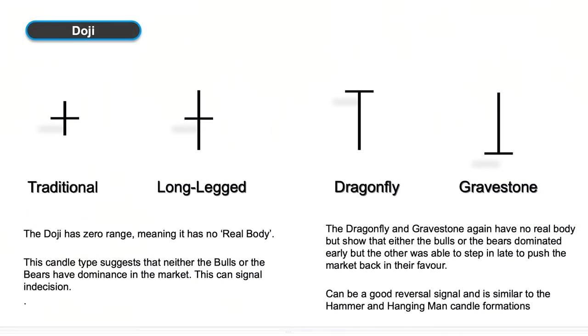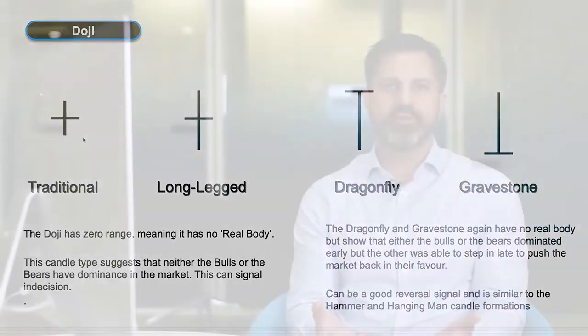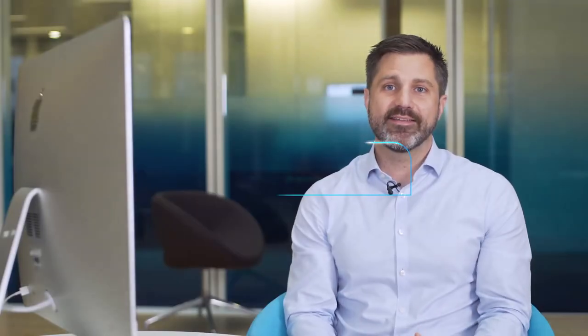The first candlestick formation we're going to look at is the doji. The doji is a small candle with a high and a low where the open and the close price are pretty much exactly the same. The second variation is the long legged doji, which is simply the same except the wicks are slightly longer. These are basically candlestick formations showing indecision — the buyers and sellers have battled throughout the day but by the end of it the price is exactly the same.